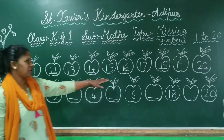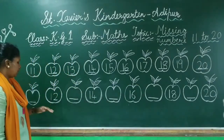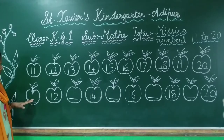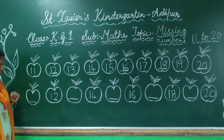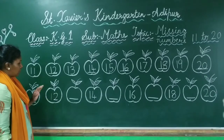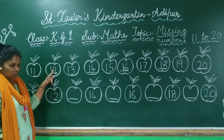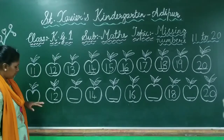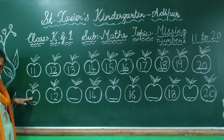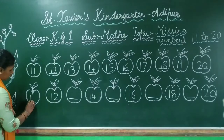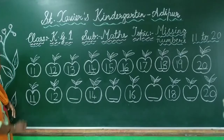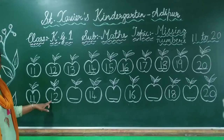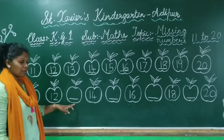We have finished the first exercise. Now we will do 11 to 20 in a different form. Okay? So look here — there is nothing here, where do we start? Now look here: 1, 2 — 12. So which number comes first? Yes, 1, 1 — 11. So it starts from 11. Okay? So here it will be 1, 1 — 11. Then 1, 2 — 12. What will come here?